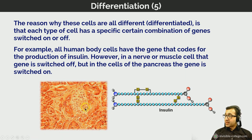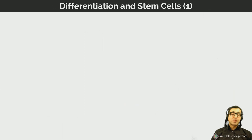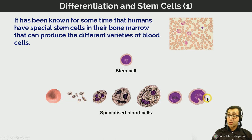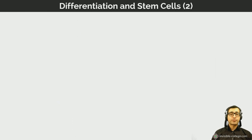Humans have stem cells in their bone marrow that can produce the different varieties of blood cells. One stem cell can divide and differentiate to produce a large variety of specialized blood cells. When the stem cell divides, one daughter cell must remain a stem cell to enable continued formation of other blood cells. Young embryos of animals and humans also contain undifferentiated stem cells. Embryonic stem cells can differentiate into any type of cell or tissue found in the organism.